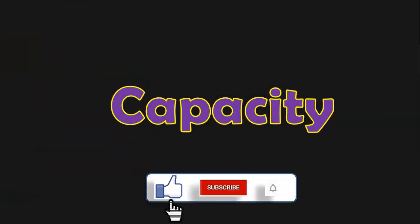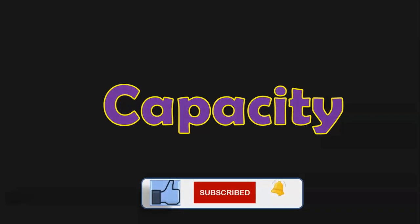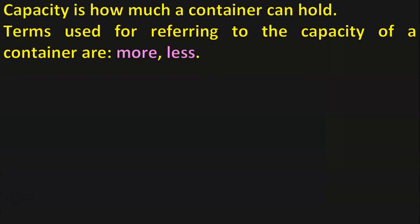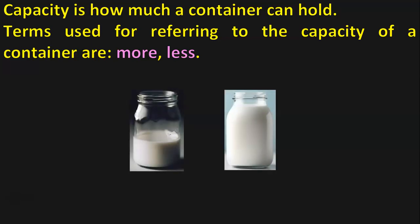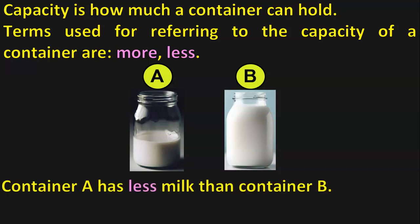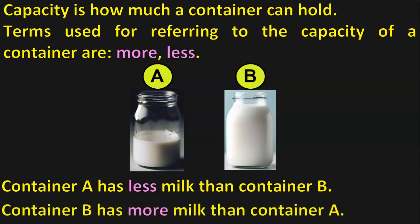The next measurement term that we are going to deal with is Capacity. Capacity is how much a container can hold. Terms used for referring to the capacity of a container are more and less. Let us take the example of these two milk containers. Name them A and B. Which container is having more milk and which is having less milk? Container A has less milk than container B. And container B has more milk than container A.